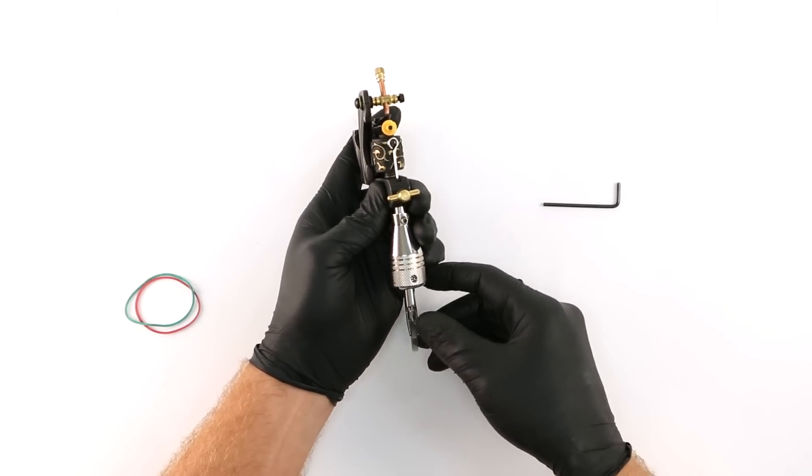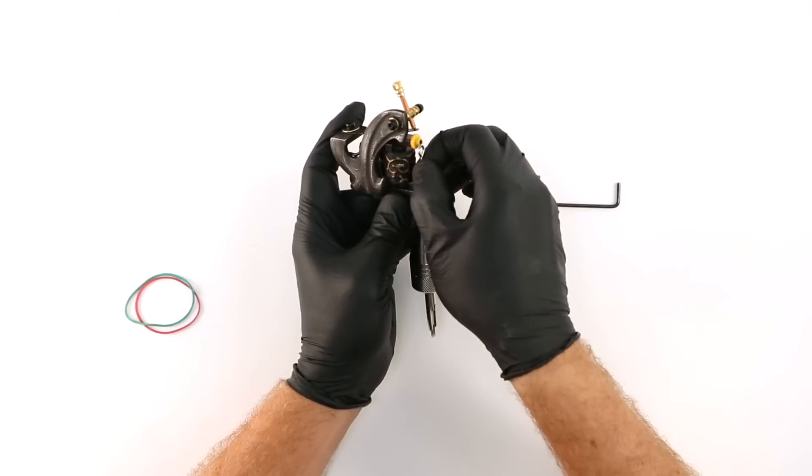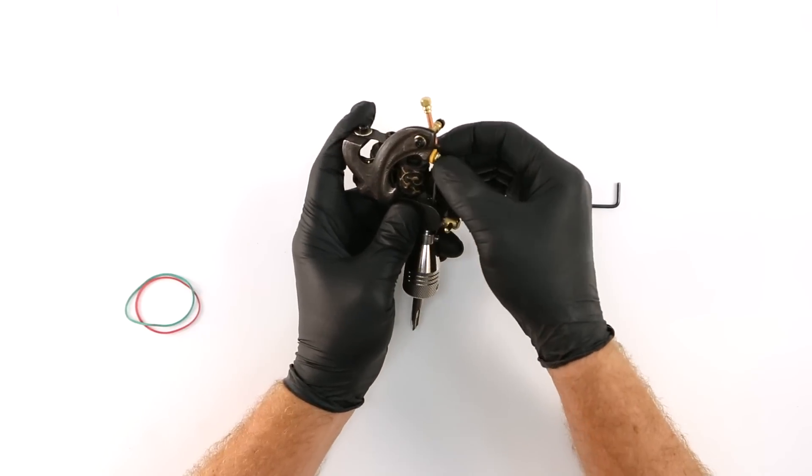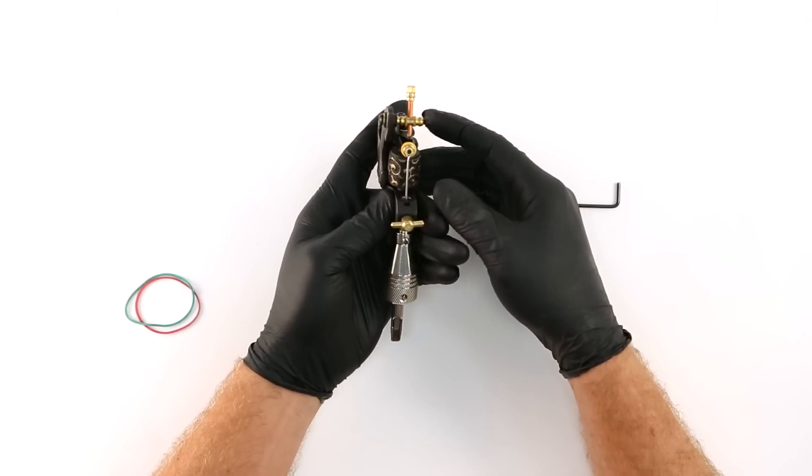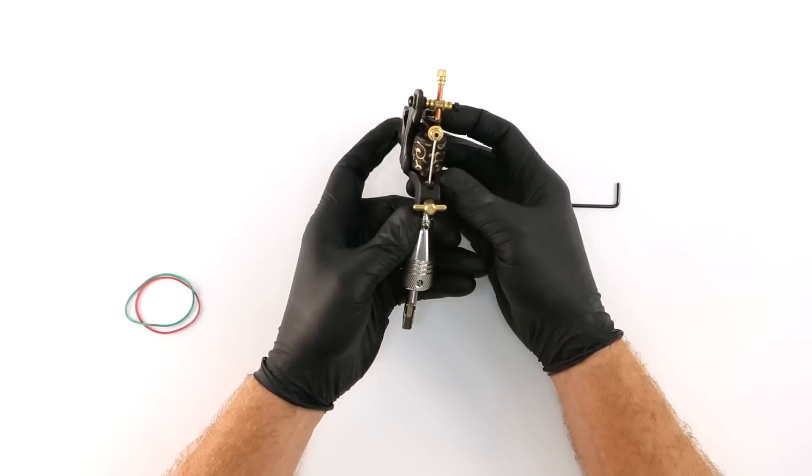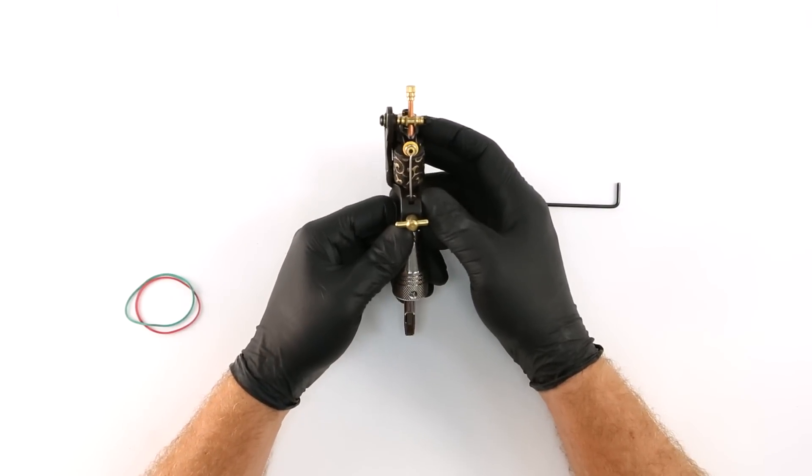Grab the needle, pull it up towards the armature bar, and attach the eye to it by slipping it over the peg on the end. Be careful not to bend the needle any more than necessary while you're doing this. Now you have the needle attached.